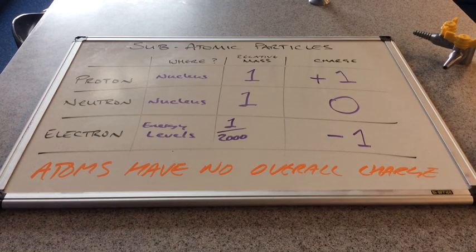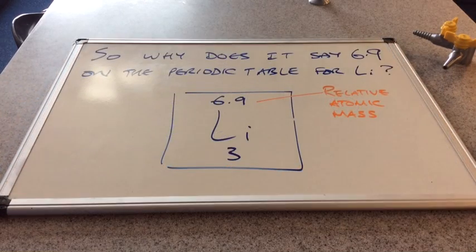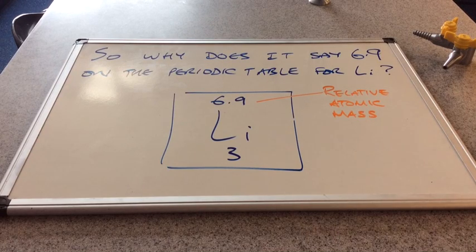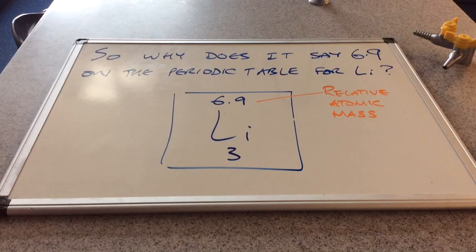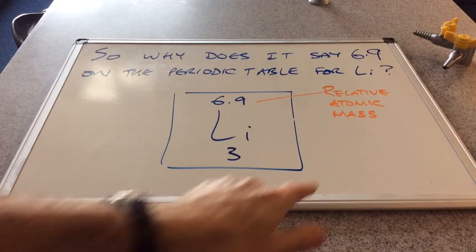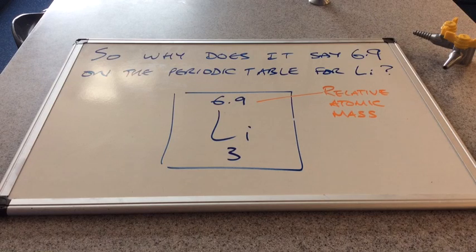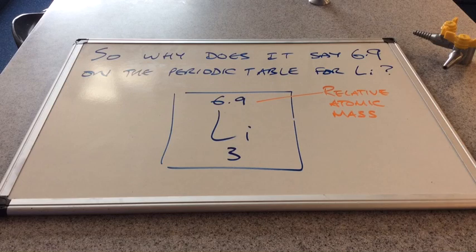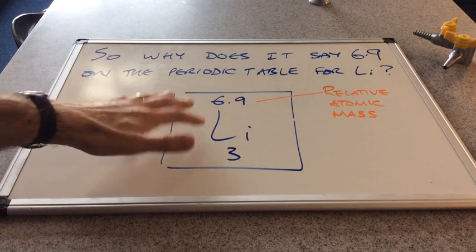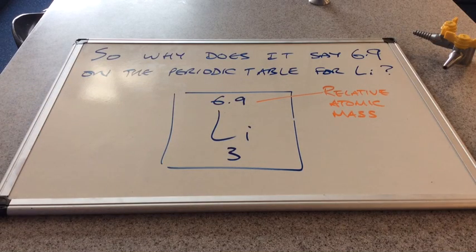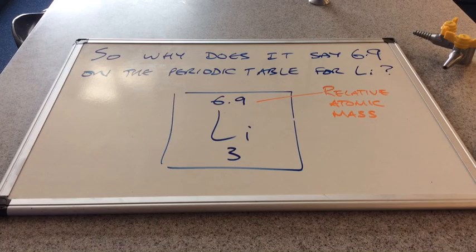Well no it doesn't, so we're going to look at that in this video. We need to introduce a new term now. The number that's on the periodic table, the mass number, actually refers to what's known as the relative atomic mass of the atom. By the end of the video we'll have defined this term. There's nothing wrong with mass number, but mass number is talking about a slightly different type of particle. So relative atomic mass is what's on the periodic table.